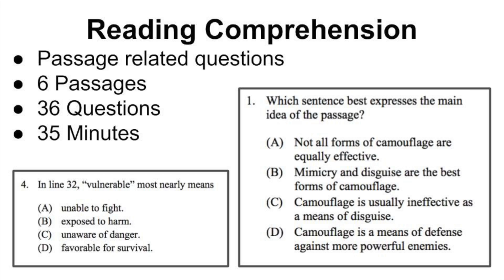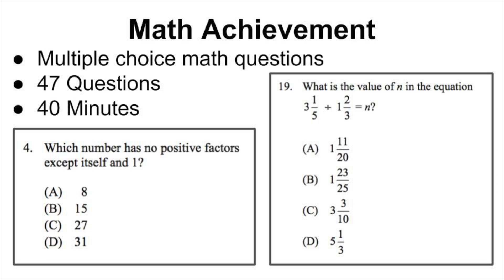The reading comprehension section consists of six passages with six questions per passage — 36 total questions that have to be completed in 35 minutes. Last but not least is the math achievement section, which is another dose of mathematics and it consists of 47 questions that must be completed in 40 minutes or less.